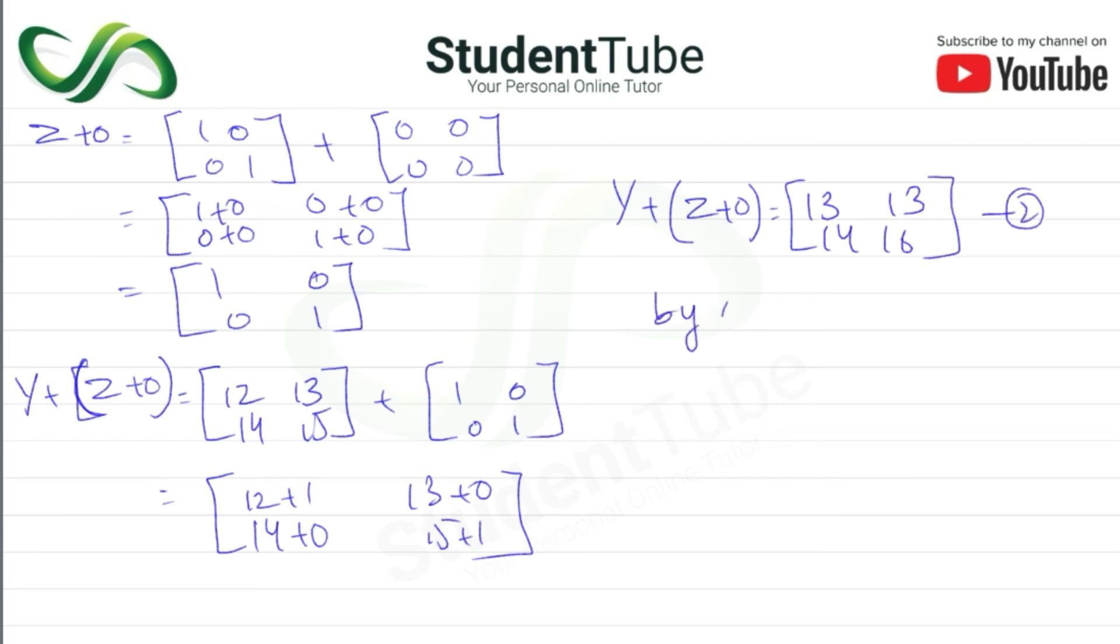So by 1 and 2, Y + Z + O is equal to Y + (Z + O), proved.